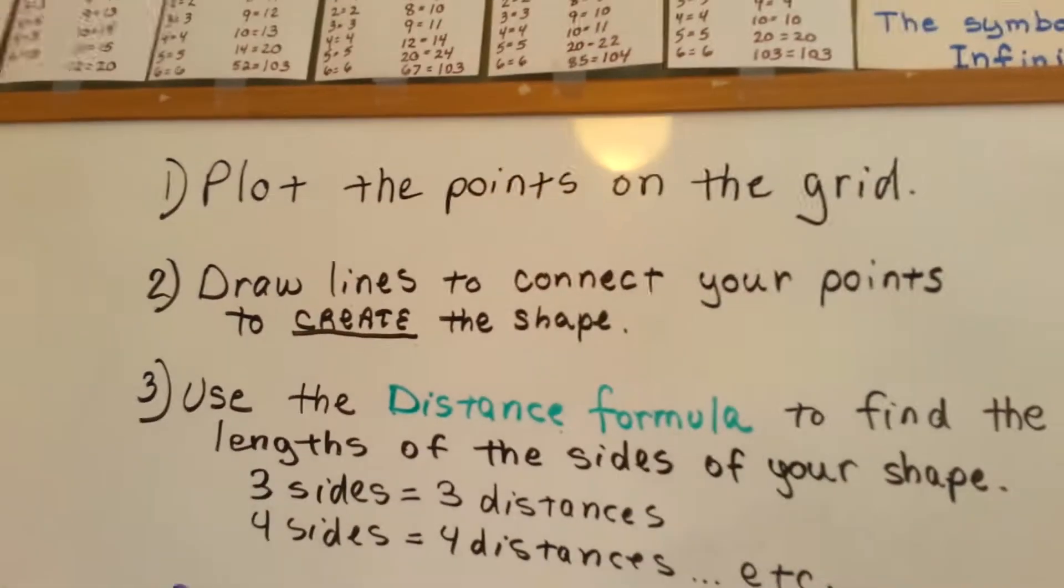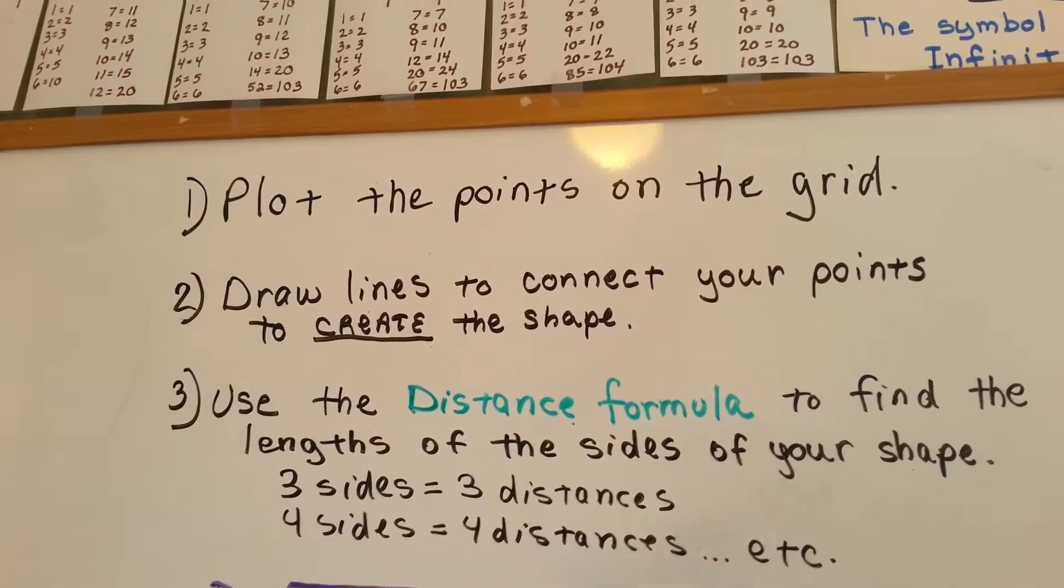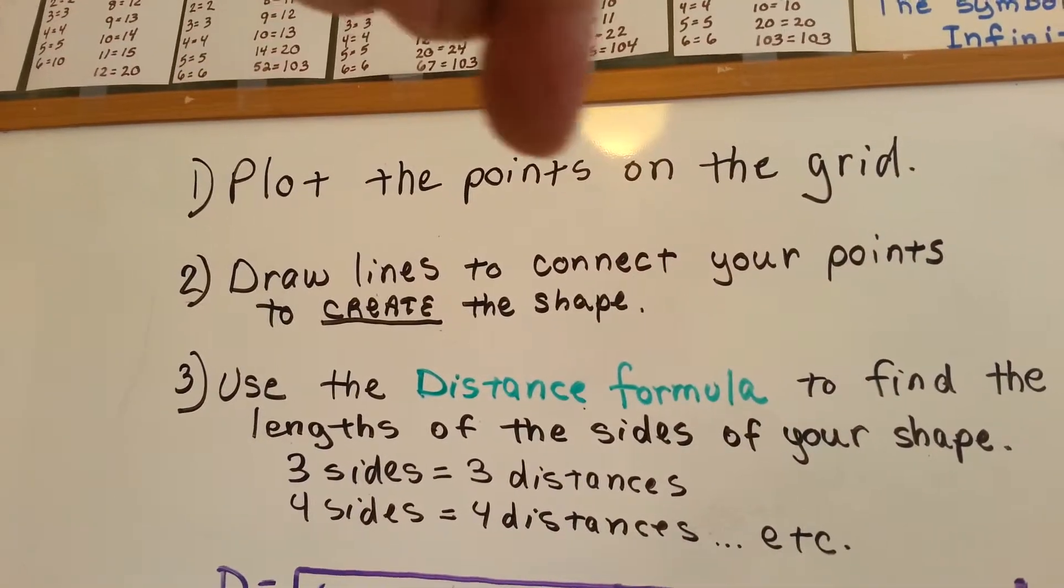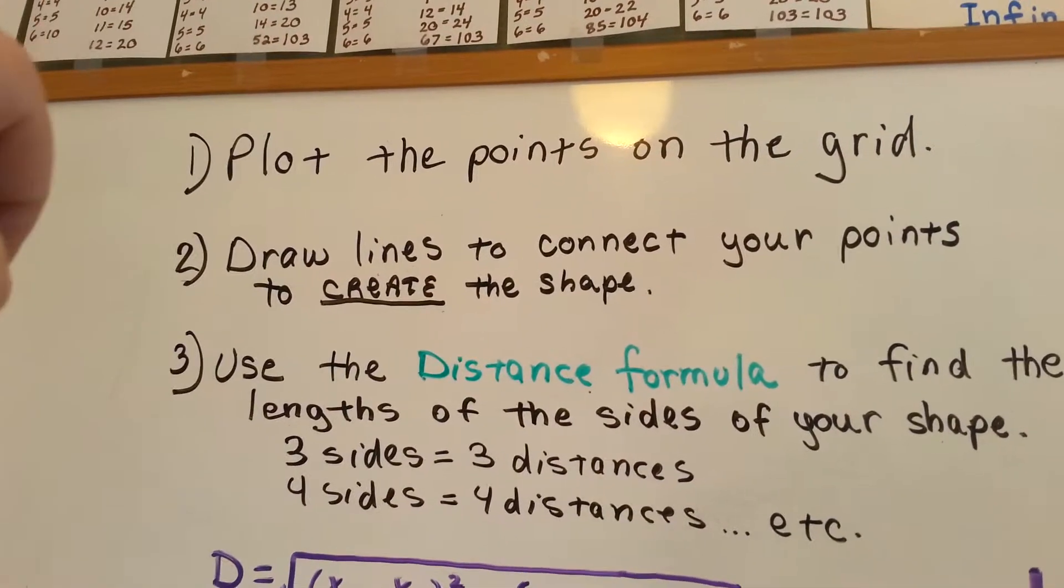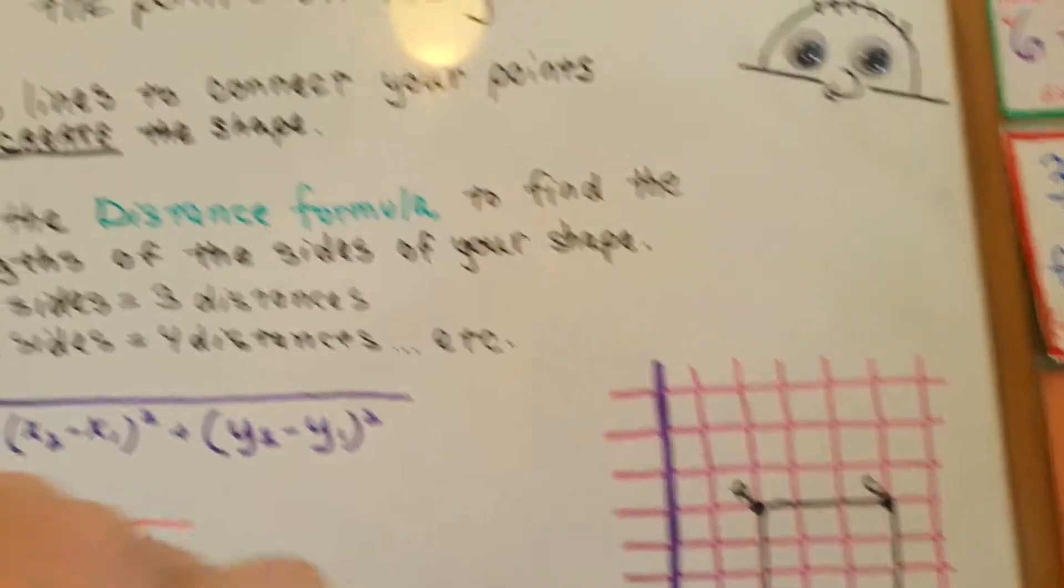So, here's the four steps. The first thing you're going to do is plot the points on the grid. Look at your ordered pairs and plot the points on the grid. I made a little grid here.